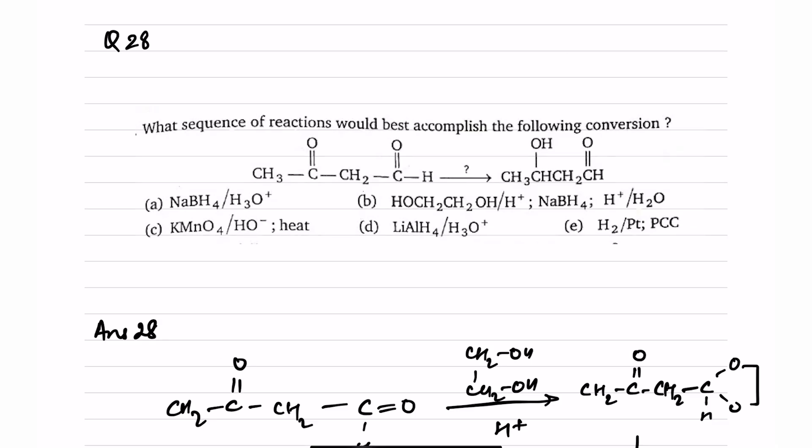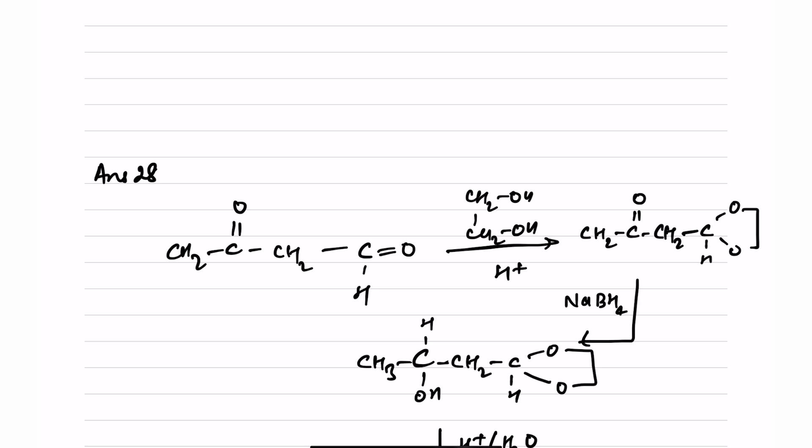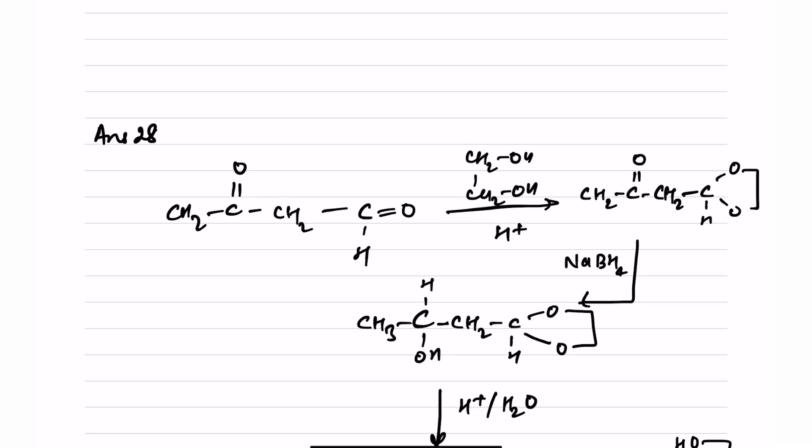Question number 28: what sequence of reactions best accomplishes the conversion where the aldehyde remains unchanged and the ketone is converted to alcohol? Option A (NaBH4) reduces both aldehyde and ketone. LiAlH4 and H2/Pt also reduce both. KMnO4 is an oxidizing agent and cannot be used. Option B uses acetal/ketal reaction for protection of the carbonyl group — this is exactly what we are looking for.